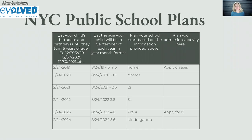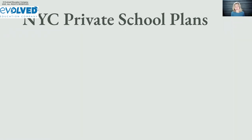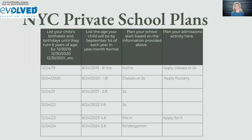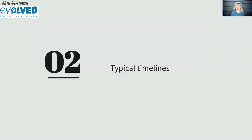Birth dates matter more when children are younger. If you're moving between systems later on, placement is usually done by grade rather than age. However, if you're going from public to private and your child has a fall birthday, they may be on the young side of their class — and it's worth talking with the school about the social implications of that.